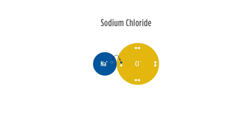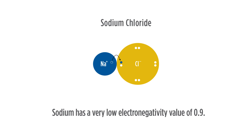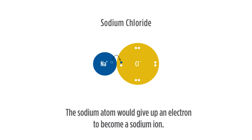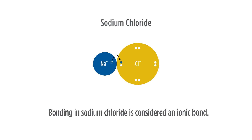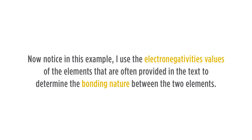Let us consider sodium chloride for the third example. The sodium has a very low electronegativity value of 0.9 on most electronegativity charts. The sodium atom would give up an electron to become a sodium ion. The chlorine has a high electronegativity value of 3.0 and would gain an electron from the sodium to become a chlorine anion. Therefore, bonding in sodium chloride is considered an ionic bond. Notice that in this example, I used the electronegativity values of the elements to determine the bonding nature between the two elements.